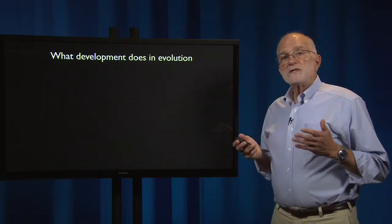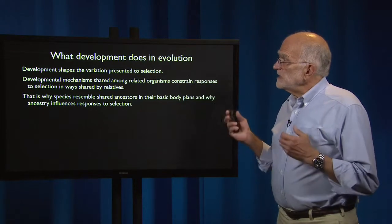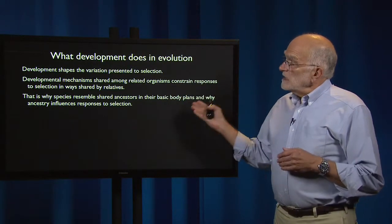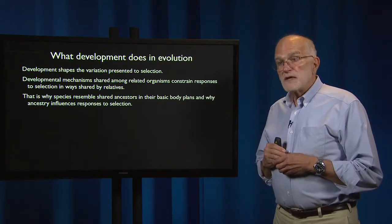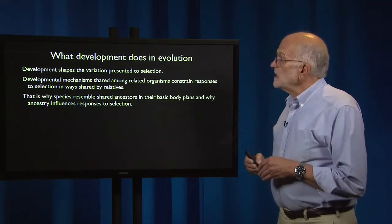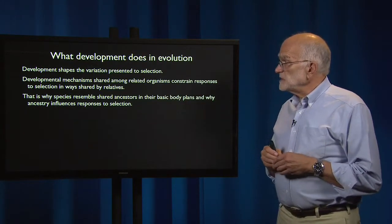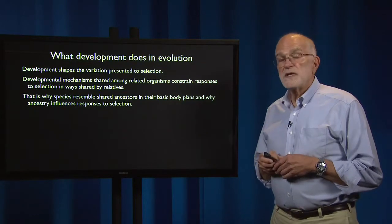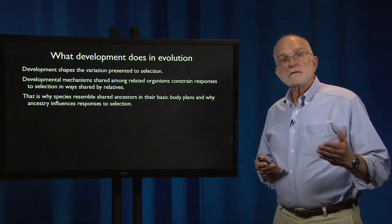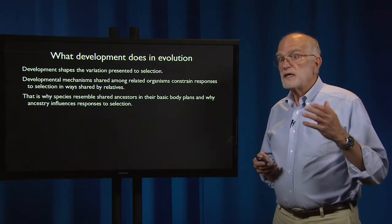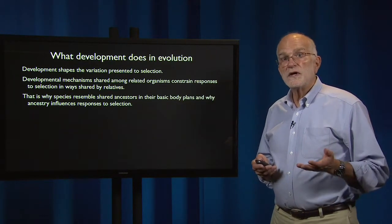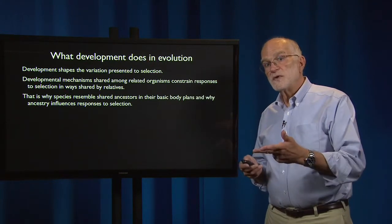So what does development actually do in evolution? It shapes the variation in the genome that gets presented to selection. The developmental mechanisms that are shared among related organisms constrain the responses to selection in ways that are shared by relatives. That's why species resemble shared ancestors in basic body plans. A fruit fly has wings and six legs and will respond to selection on its ability to fly or walk in quite a different way than a bird that has two wings and two legs.